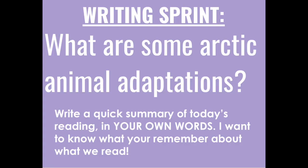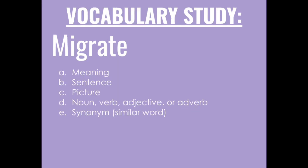On a piece of paper or in your notebook, you're going to be completing today's writing sprint to answer the question: what are some arctic animal adaptations? Write a quick summary of today's reading in your own words. Now onto our vocabulary study — write down the word migrate, then write down the meaning, then write the sentence where the word is highlighted in yellow, then draw a picture, then tell me whether the word is a noun, verb, adjective, or adverb, and finally give me a synonym — a similar word.